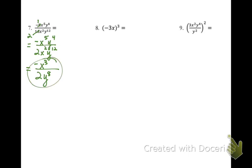And then look at our y variables. So we have y to the 4th divided by y to the 12th. So take the biggest exponent, which is 12, and subtract the smaller. Wherever the biggest exponent started, that's where your term ends up. So our final answer is negative x to the 3rd over 2y to the 8th.